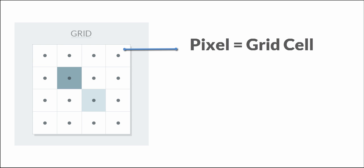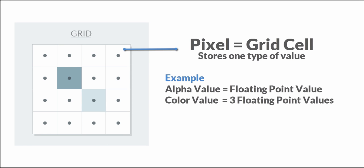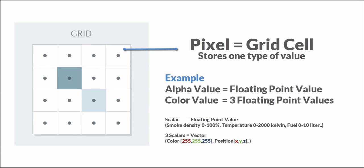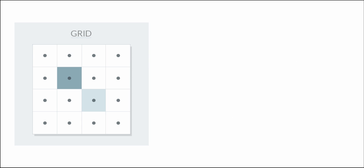A pixel can store a value — we all know that from Photoshop — and this could be an alpha value, which is just a floating point value, or it could be a color value, so three floating point values. A single floating point value could be interpreted as smoke density, temperature, or fuel amount. Three floating point values could be used for a color or a position. It's just a matter of interpretation. There's also a term called scalar, which is just the same as floating point value, but shorter, so it is sometimes used in the framework.